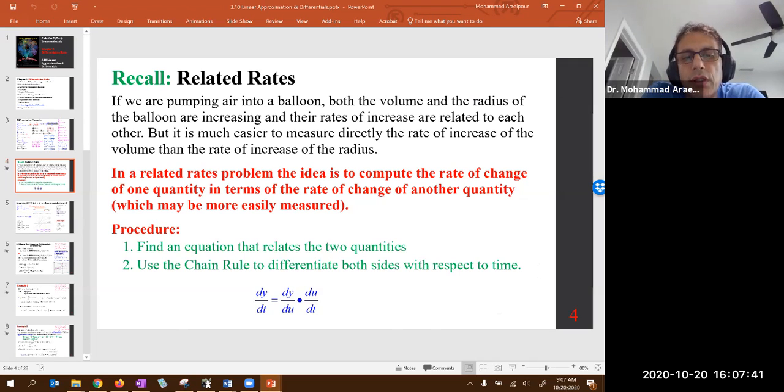You want to go over and make sure there is no problem then and there. Related rates were discussed in short: dy/dt is dy/du times du/dt. You relate the two quantities using geometry, trigonometry, you name it, and then you differentiate using the chain rule.